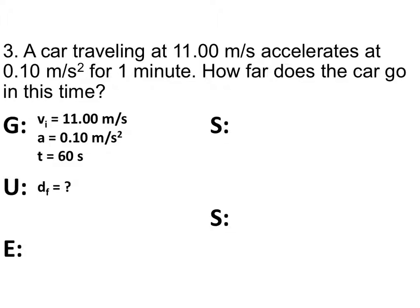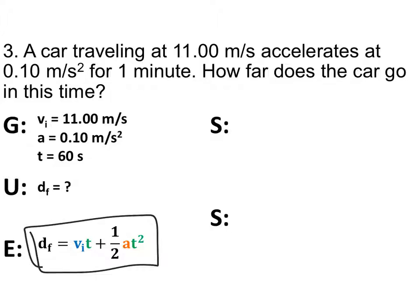So the first thing you have to do is write down your givens. Vi is 11 meters per second, acceleration is 0.10 meters per second squared, and time is 60 seconds. We're looking for how far, so that's our unknown: d equals question mark. Looking at the possible equations and what variables we know — we have vi, a, and t — we're going to use: d = vi·t + ½·a·t². When you see numbers next to each other like that, you're just multiplying all three together.